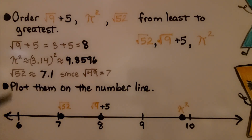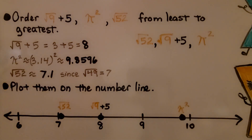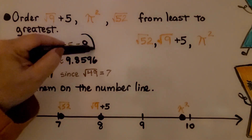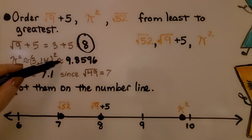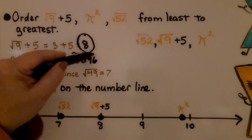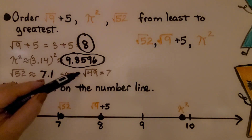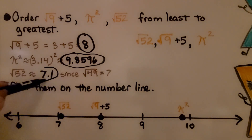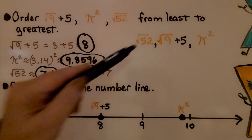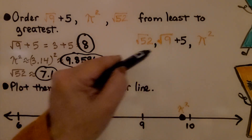Here it's telling us to order the square root of 9 plus 5, pi squared, and the square root of 52 from least to greatest. The square root of 9 is 3, we add 5 and get 8. Pi squared is 3.14 times 3.14, which gives us approximately 9.8596. The square root of 52 is approximately 7.1 because it's close to the square root of 49, so it's a little more than 7. In order from least to greatest: square root of 52, then square root of 9 plus 5 which is 8, then pi squared.